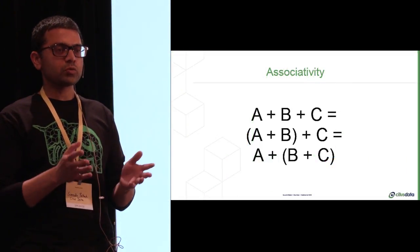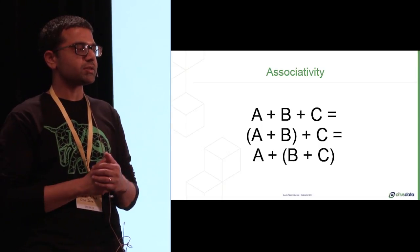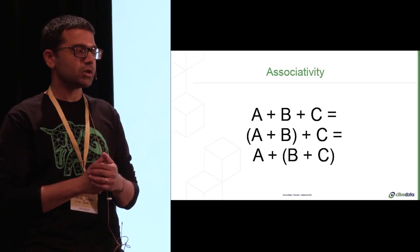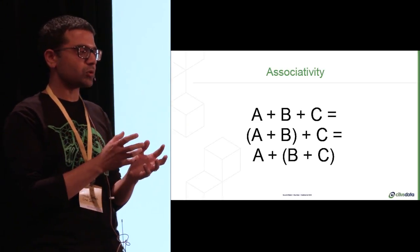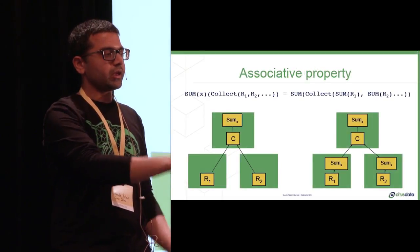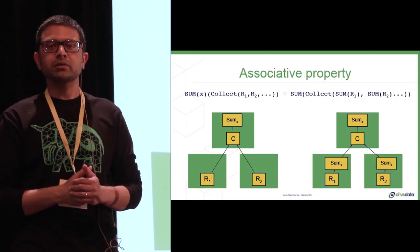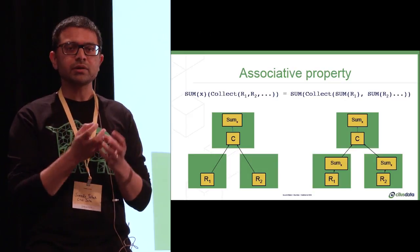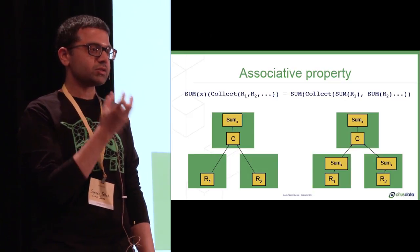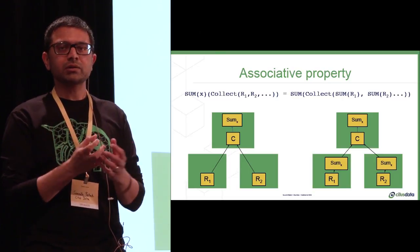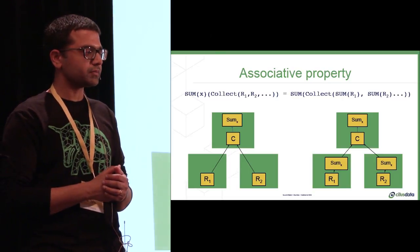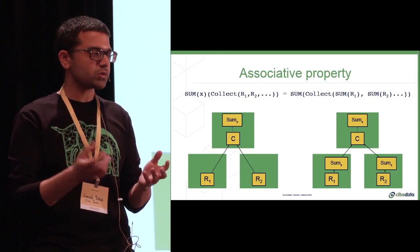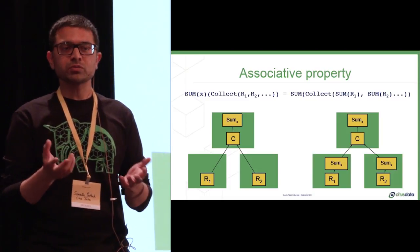We can also look at the associative property. In this case, if I'm adding a few numbers, it doesn't matter in which order I add them. I can add a plus b first and add that to c. Or I can add b plus c and then add that to a. And, you know, very simply, I can use that to parallelize my aggregates. In this case, sum. So instead of collecting the data and then calculating the sum, I can sum the columns on each worker node, collect the sums, and then sum the sums on the coordinator. This is, again, the simplest example. For average, for example, you would do a sum and count. For others, you can consider things like approximation algorithms as well.